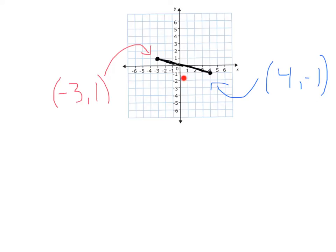Here we have a segment with endpoints, negative 3, 1, and 4, negative 1. Now, this one's a little more difficult to find the middle. We know it's going to be somewhere around here, but I can't tell exactly where that point is. So, let's go ahead and just use our midpoint formula.